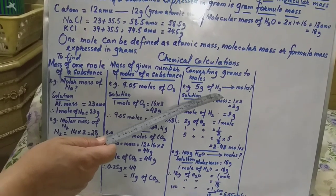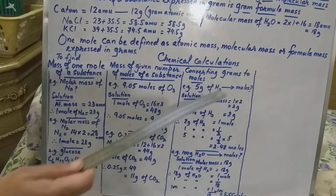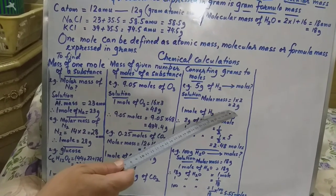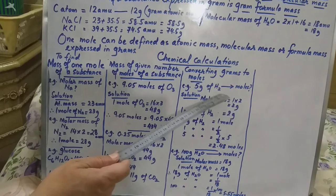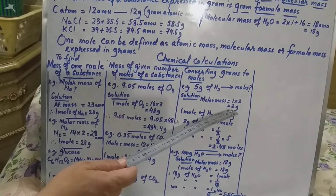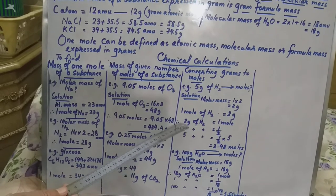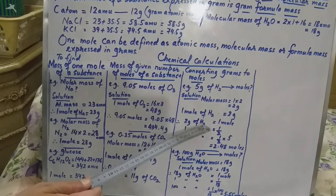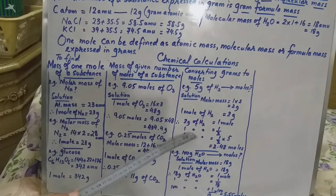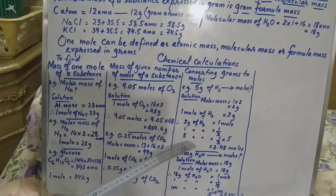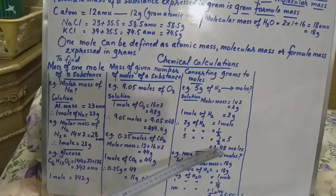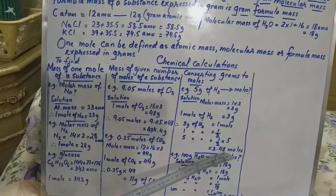5 grams of hydrogen is equal to how many moles? Molar mass is 2 grams of H2. 1 mole of hydrogen is 2 grams. So n equals 1 over 2 multiplied by 5, that will give you 2.5 moles.